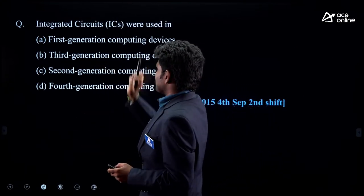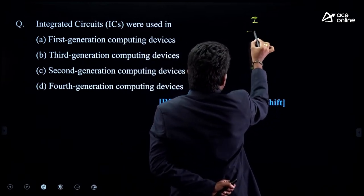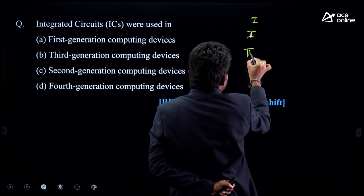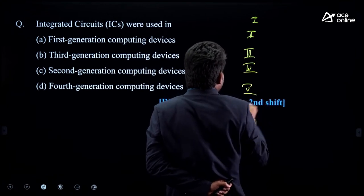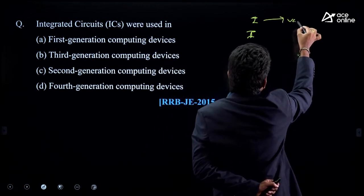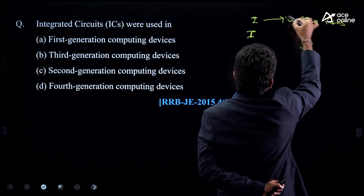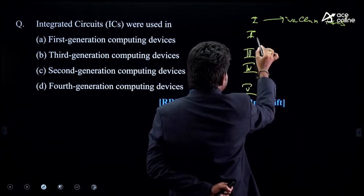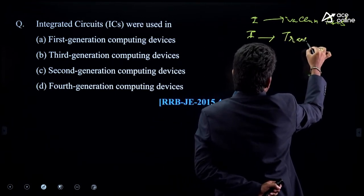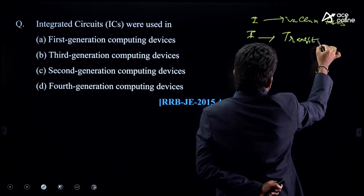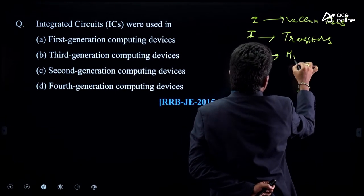Next question: 'Integrated circuits are used in...' There are five generations. In the first generation, we used vacuum tubes — very huge, expensive, releasing much heat. In the second generation, we used transistors. In the third generation, we used integrated circuits. In the fourth generation, VLSI. In the fifth generation, ULSI.